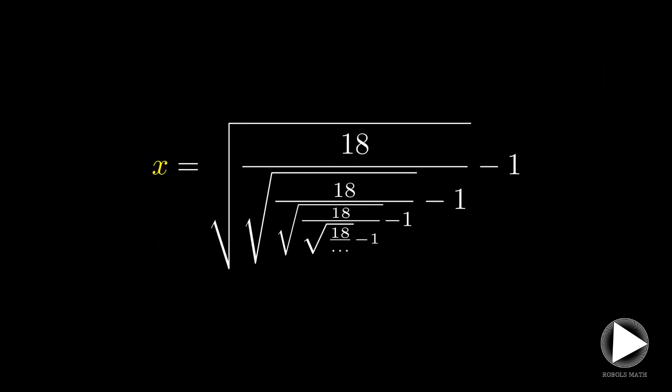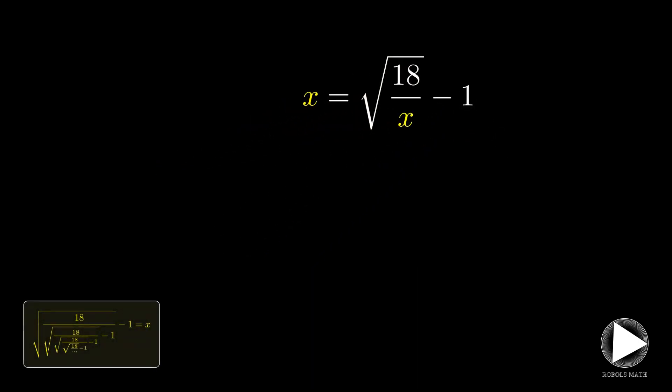Let this continued fraction be x. Assuming this converges, we can let the subpart be x as well. Hence, we are left with x being equal to the square root of 18 over x minus 1.